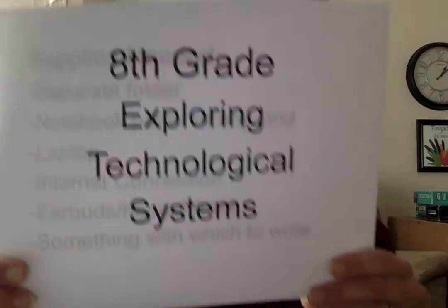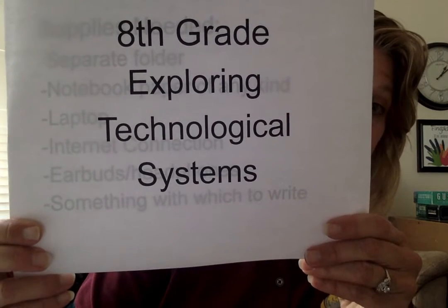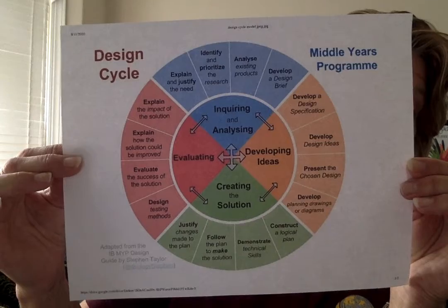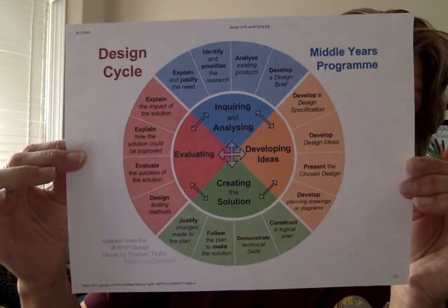Next, I would like to talk about 8th grade. The 8th grade class that I teach at the Brawley School is called Exploring Technological Systems. This course actually deals with any type of technology — what technology is — and we will also look at inventors of different types of technology throughout time. We will also create projects, and with those projects, we again will implement what's called the design cycle. Those same four segments we will actually complete as we're creating our project.